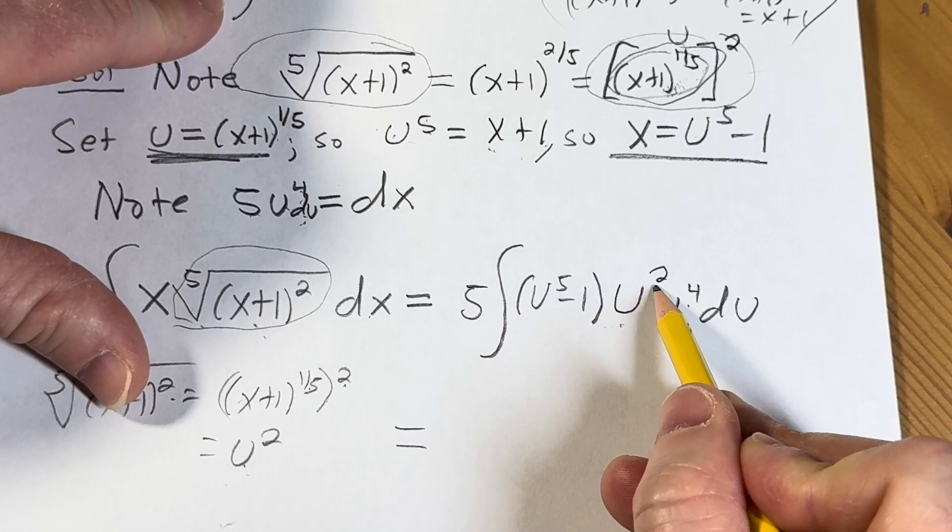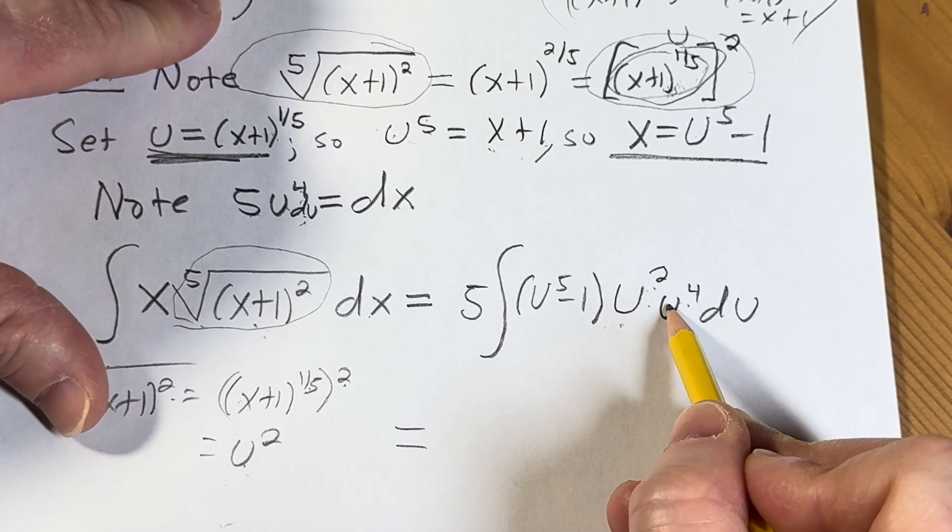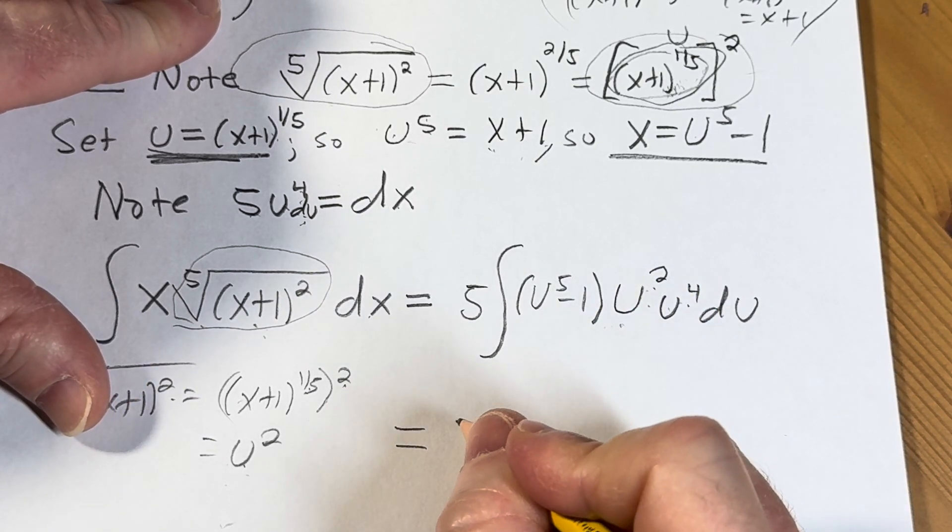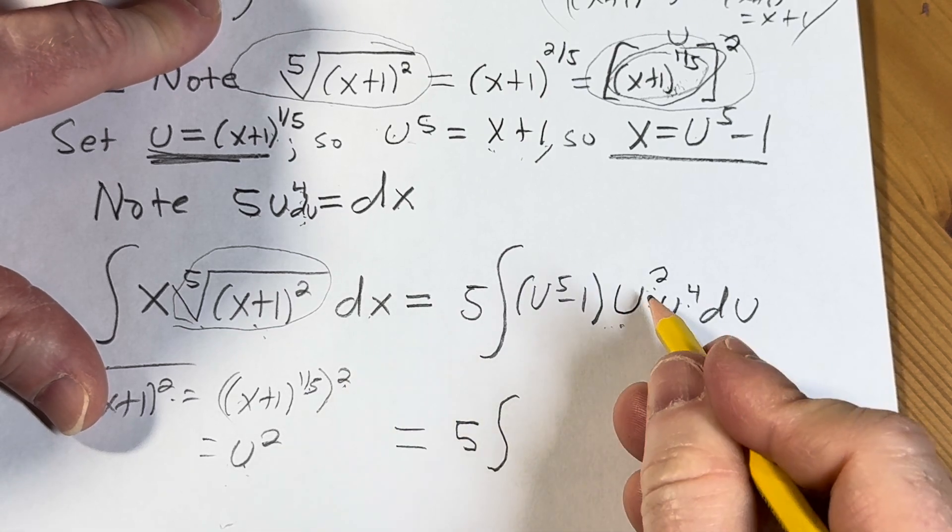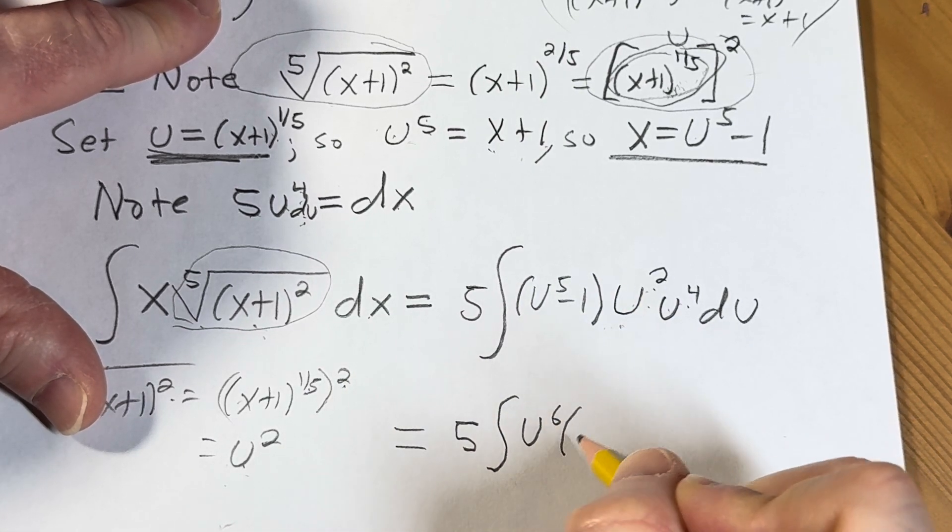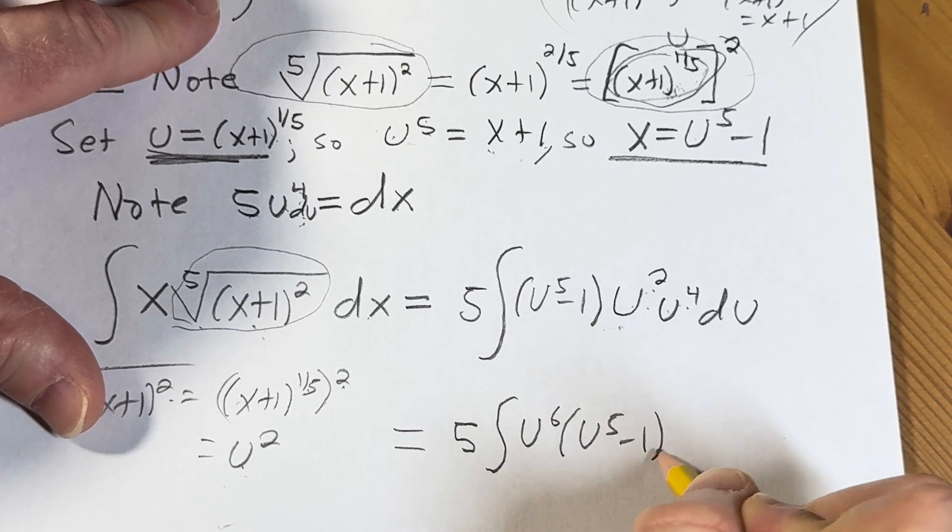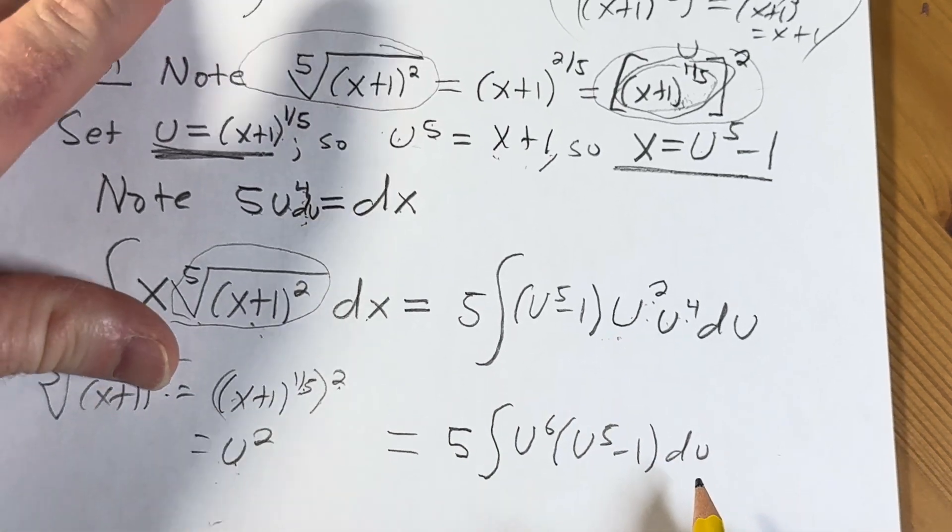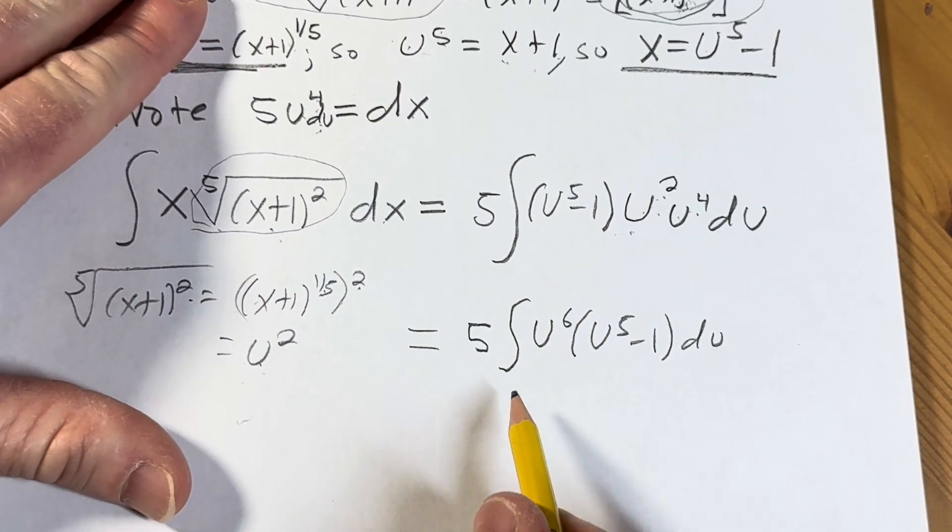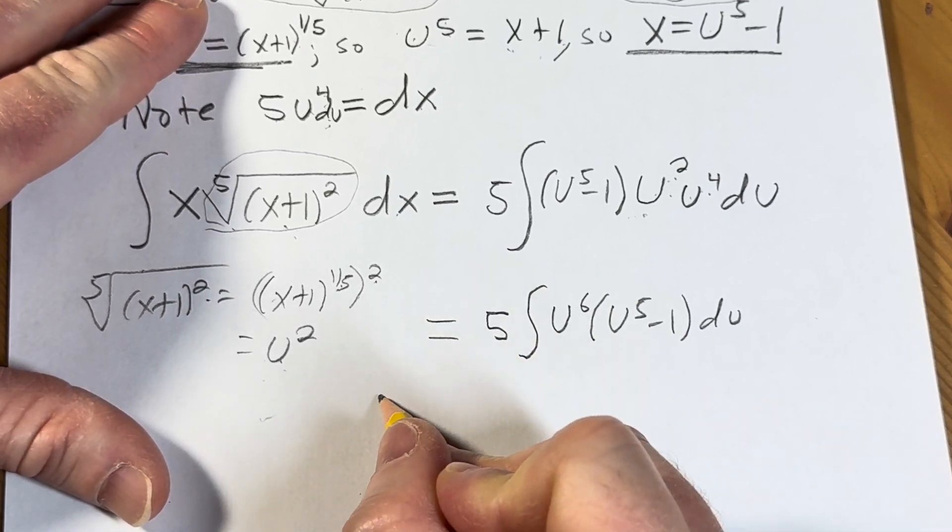This is u to the 6th. Because when you multiply these and the bases are the same, you add the exponents. So let's take that extra step just to show it. So this will be u to the 6th times u to the 5th minus 1 du. So we're going to be careful here.